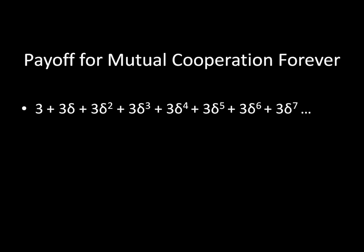And this is going to be your payoff for mutual cooperation forever. You might think that's even more complicated than just 3 + 3 + 3 + 3... Now not only do we have 3s, but we also have these discount factors, these deltas, floating in there as well. But as it turns out, this is rather simple. This is something known as a geometric series, and despite the fact that it goes on forever, it actually has a very simple closed-form solution. And that's what we're going to be talking about next time.